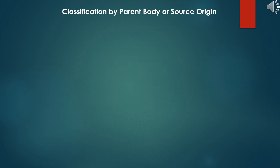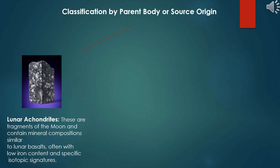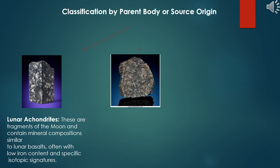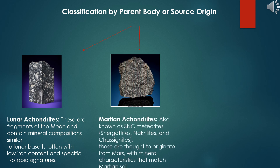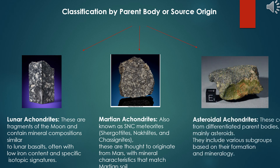Classification by parent body or source origin. Lunar achondrites: these are fragments of the moon and contain mineral compositions similar to lunar basalts, often with low iron content and specific isotopic signatures. Martian achondrites, also known as SNC meteorites (shergottites, nakhlites and chassignites): these are thought to originate from Mars, with mineral characteristics that match Martian soil and atmosphere data. Asteroidal achondrites: these come from differentiated parent bodies, mainly asteroids, and include various subgroups based on their formation and mineralogy.